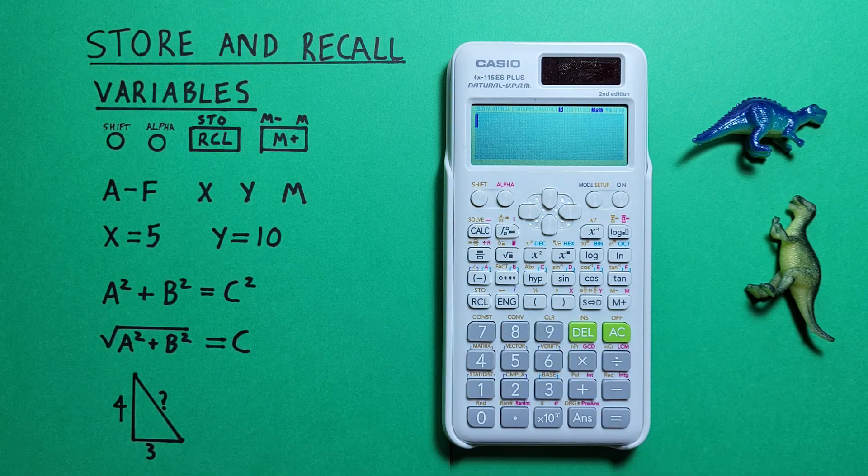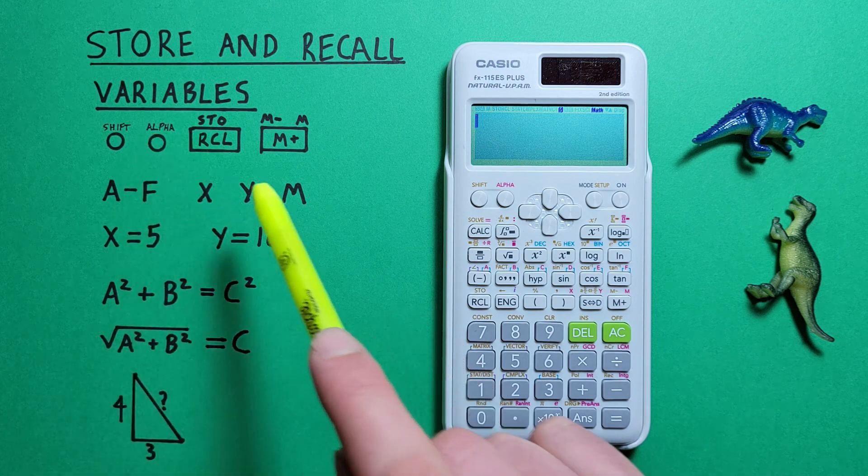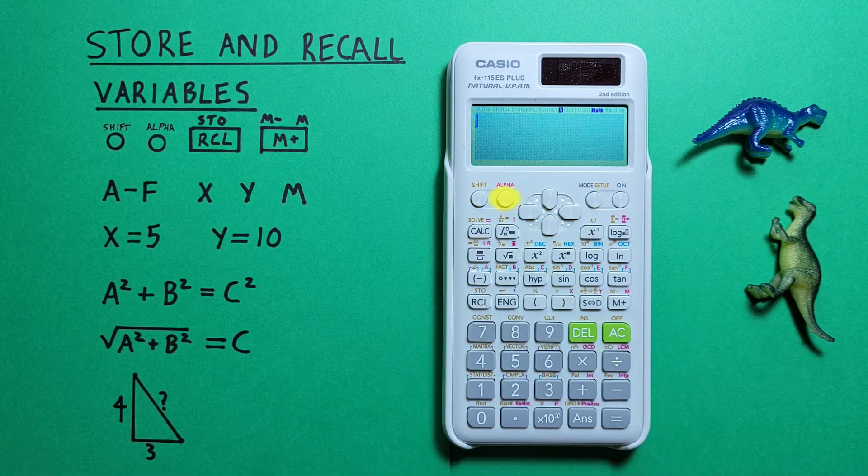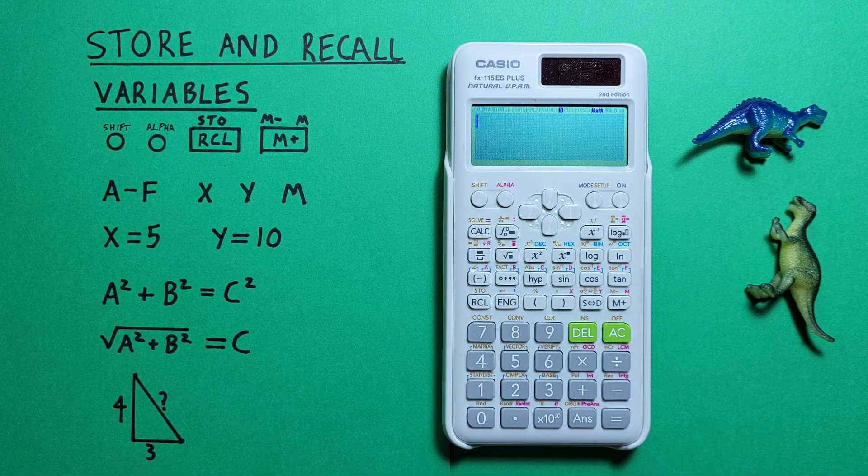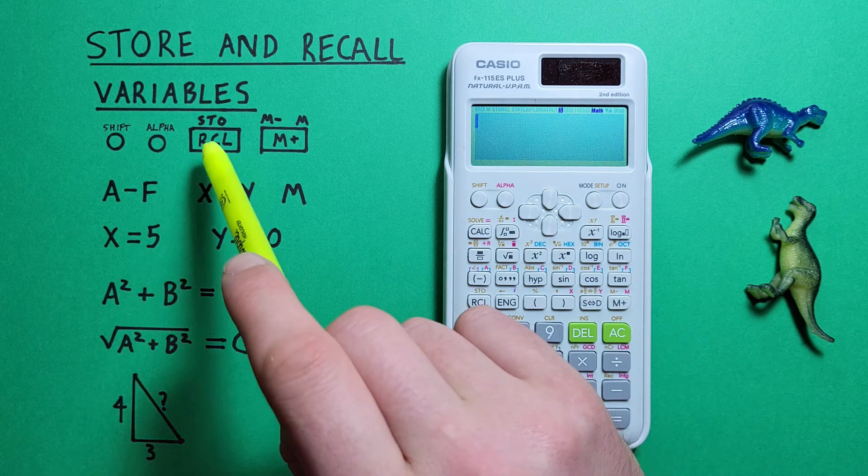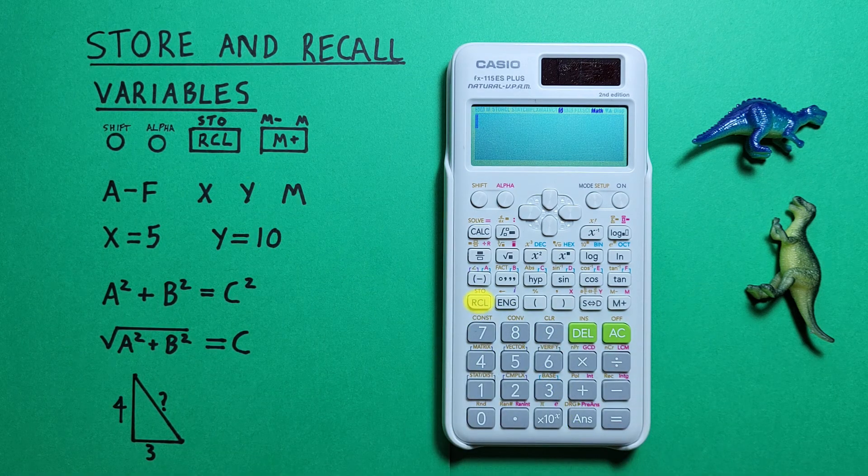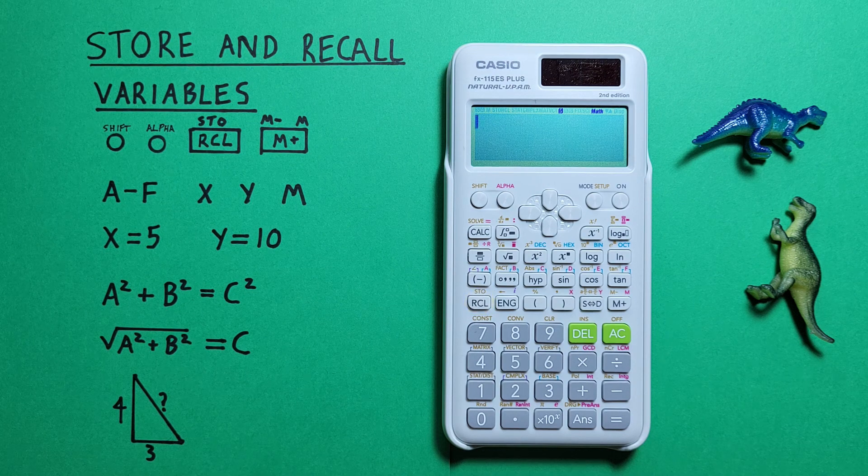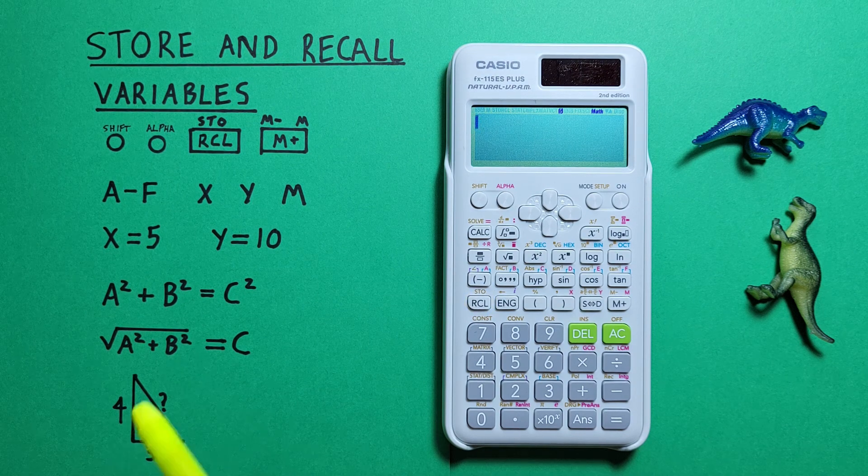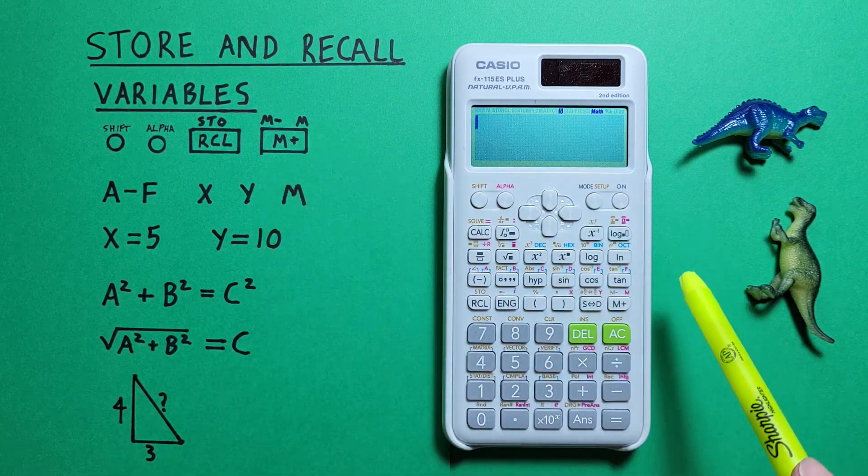The alpha key that looks like this located here, the store and recall key that looks like this located here, and the independent variable or M plus key that looks like this located here.